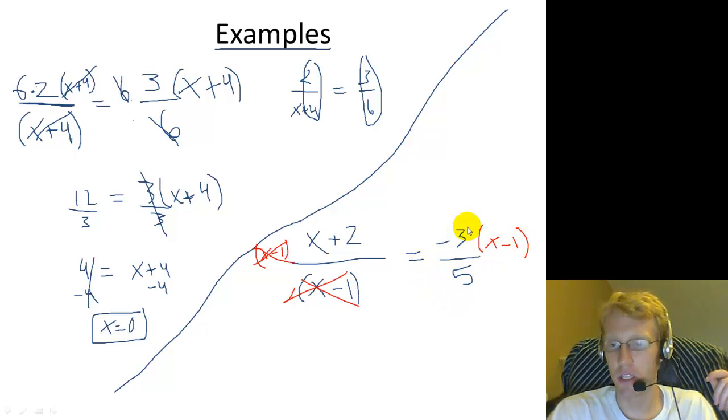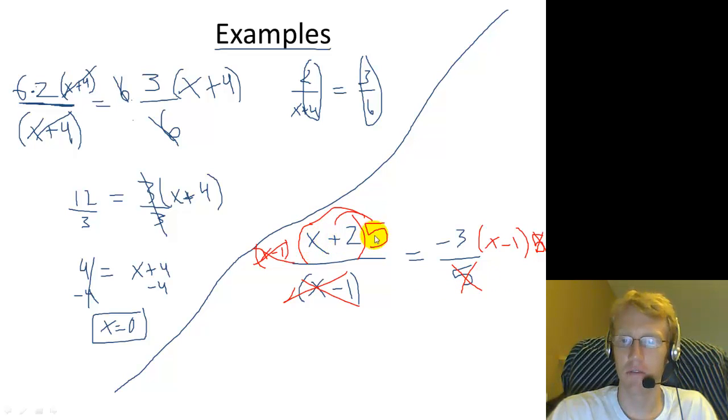Now we have x plus 2 equals negative 3 fifths x minus 1. We could distribute this negative 3 fifths over here, but since it's a nasty fraction, we don't want to deal with fractions. The easier thing to do is multiply both sides by 5. So if we cancel the 5 out here and we multiply the 5 up here, that's the same as multiplying it by 5 here and canceling. So those two 5s canceled out. This 5 is here. Now we distribute. And we get 5 times x plus 2 times 5, which is plus 10 equals. And then over here we distribute negative 3x, and negative 3 times negative 1 is plus 3.